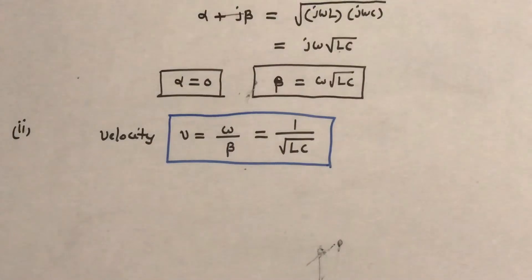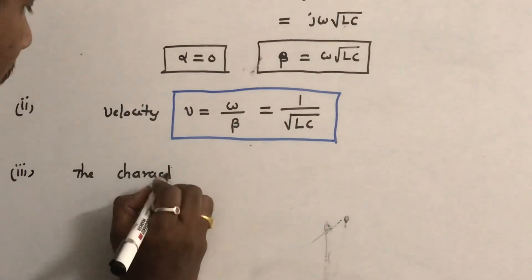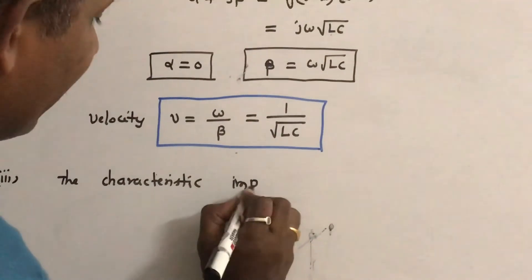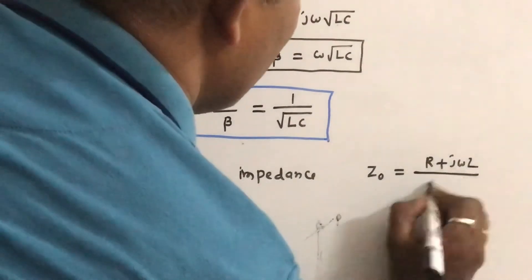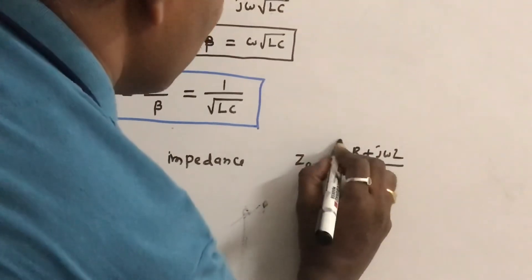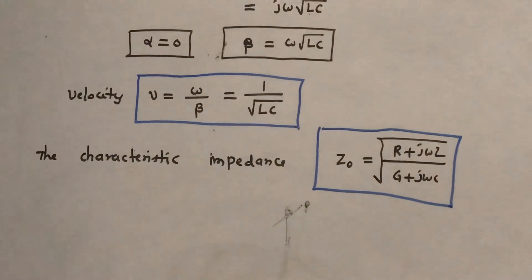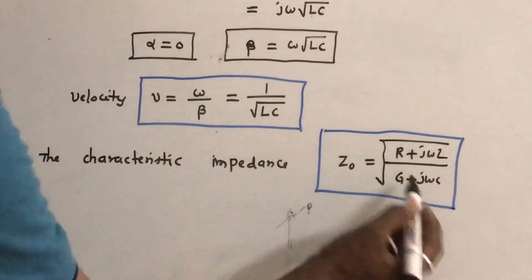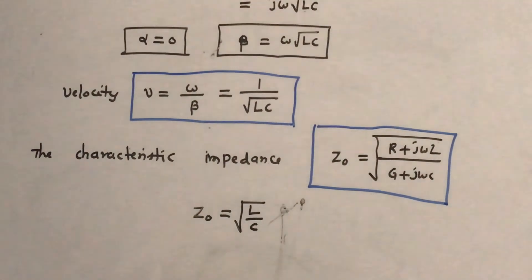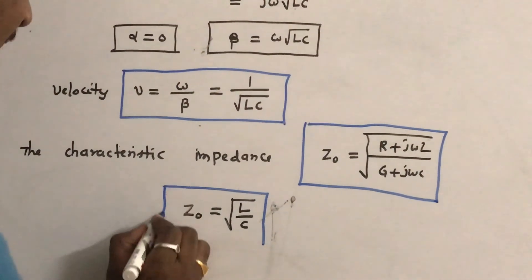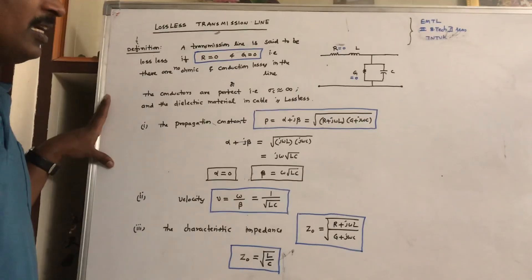The last parameter is the characteristic impedance Z0. The general formula is Z0 = √((R + jωL)/(G + jωC)). Substituting R = 0 and G = 0, the jω terms cancel out, and the characteristic impedance of the lossless cable is given by Z0 = √(L/C). These are the parameters you have to mention for a lossless transmission line to get full marks in the examination.